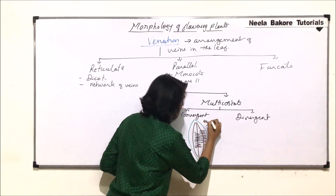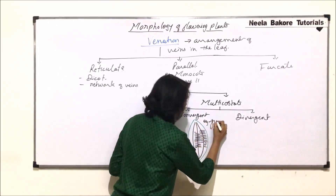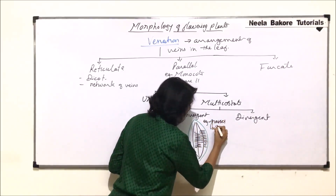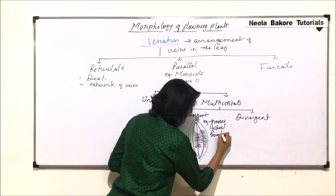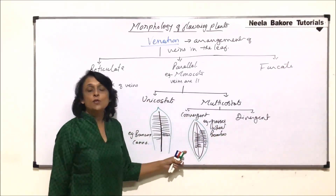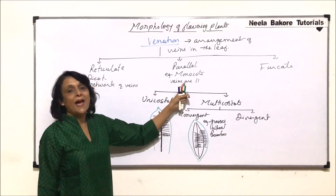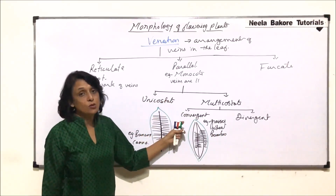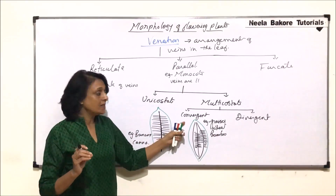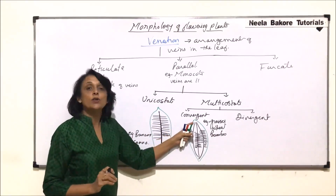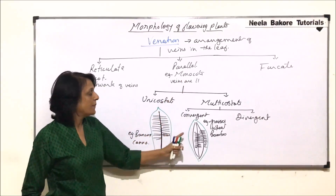The example of convergent multicostate parallel venation is all kinds of grasses including wheat and bamboo. These are examples where we find multicostate parallel venation that is convergent — meaning many main veins converging and the branches are parallel to each other.